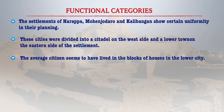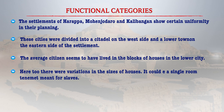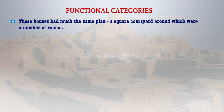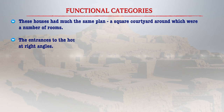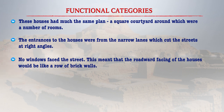The average citizen seems to have lived in the blocks of houses in the lower city. There are variations in the sizes of houses — it could be a single room or houses complete with courtyards and having up to twelve rooms. The bigger houses were provided with private wells. The plan was basically related to a square courtyard around which there were several rooms. The entrances to the houses were from the narrow lanes which cut the street at right angles. During those times, no windows faced the street, so the road-facing side of the houses would be like a row of brick walls.